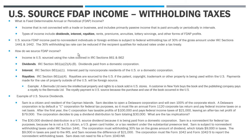For FDAP income, it's basically passive income. The primary types include dividends, interest, royalties, certain types of rents — rents can actually file an election to be treated as not FDAP income, as ECI — premiums for insurance, annuities, lottery winnings, and a whole other laundry list. But the big ones I've highlighted are dividends, interest, and royalties, which most commonly have these withholding tax issues.